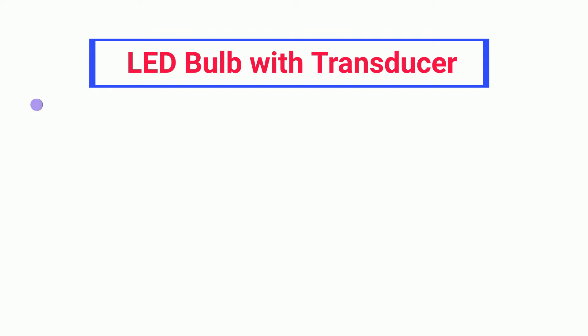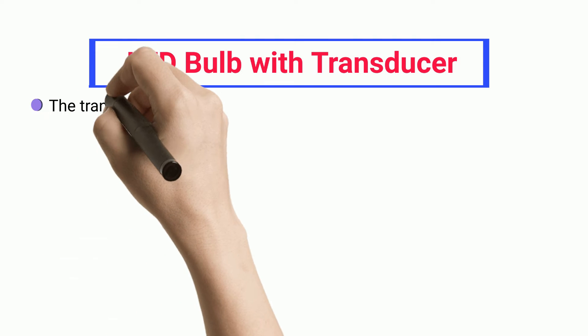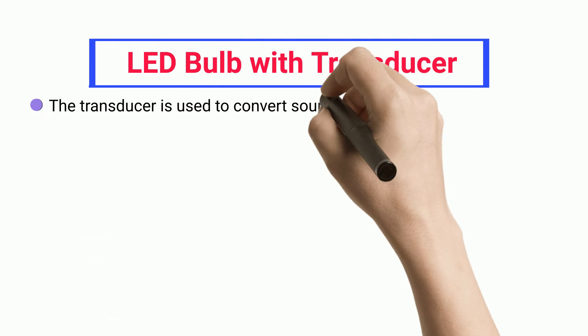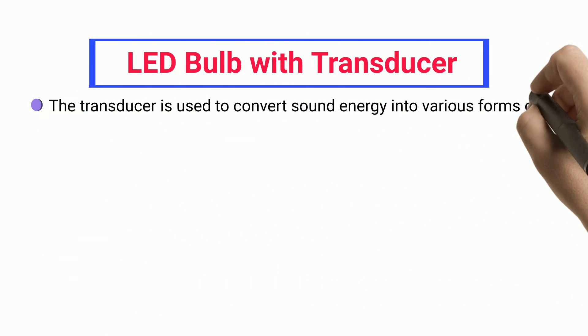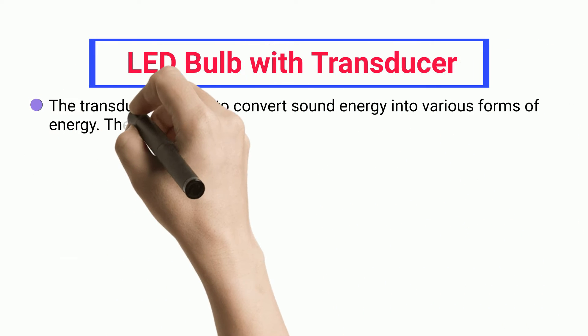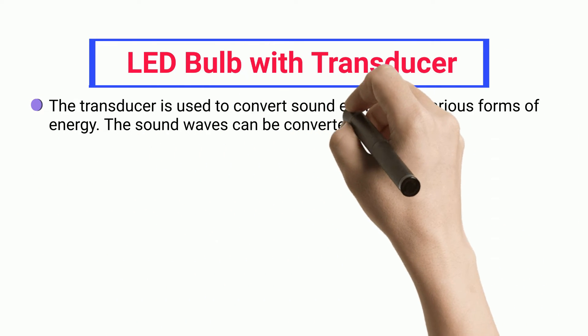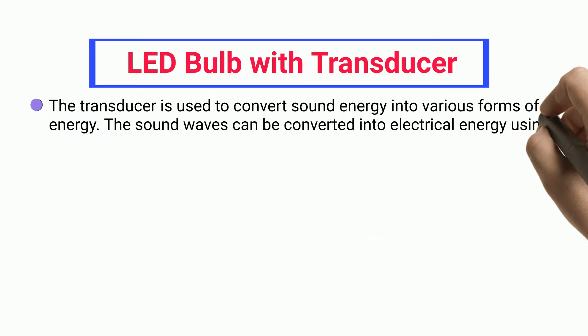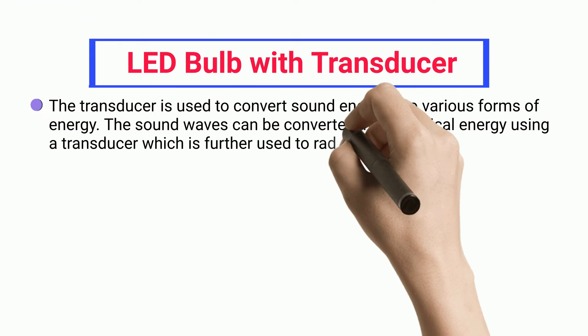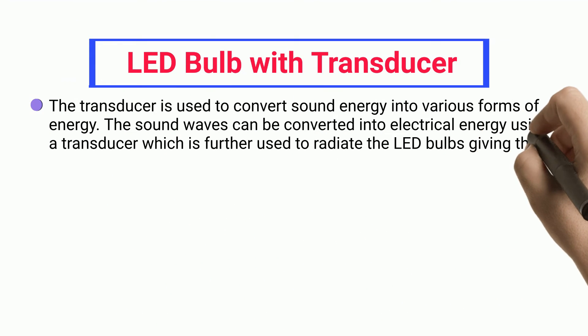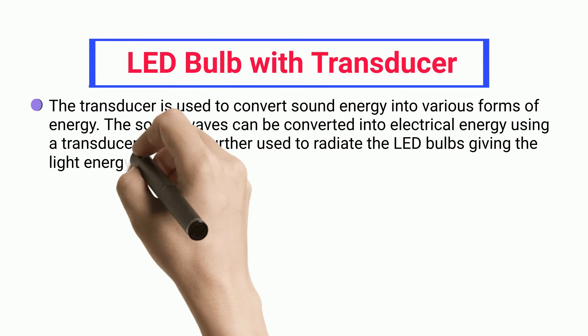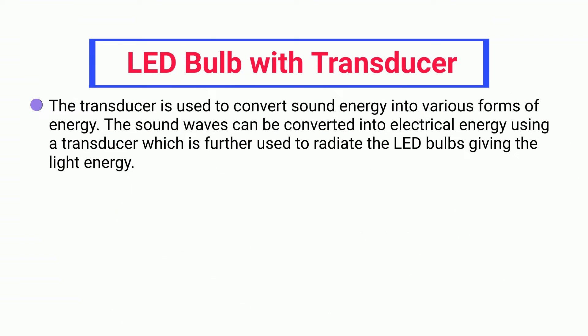LED bulb with transducer: The transducer is used to convert sound energy into various forms of energy. Sound waves are converted into electrical energy using a transducer, which is further used to radiate LED bulbs, giving light energy.